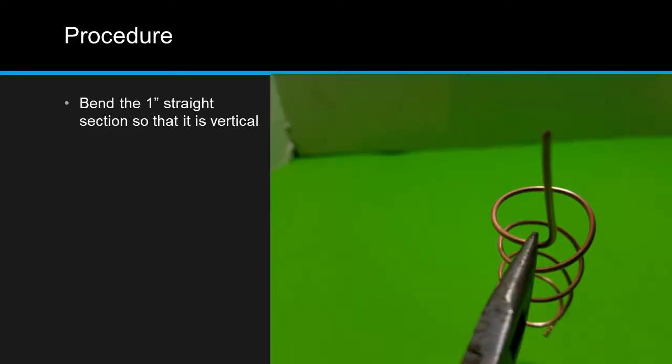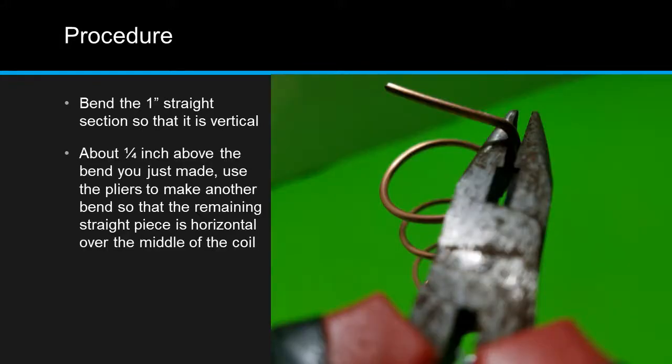Using your pliers, bend the one inch straight section so that it is vertical. About a quarter inch above the bend you just made, use the pliers to make another bend so that the remaining straight piece is horizontal over the center of the coil.